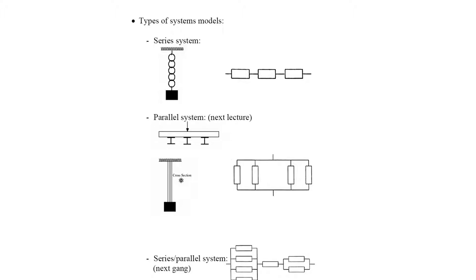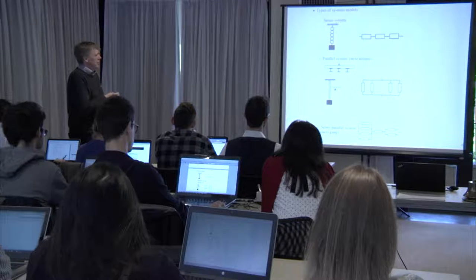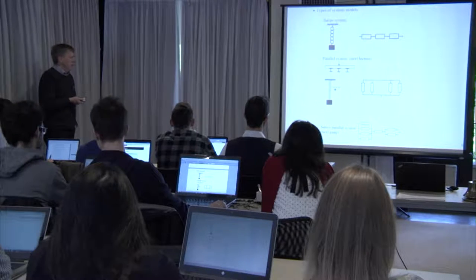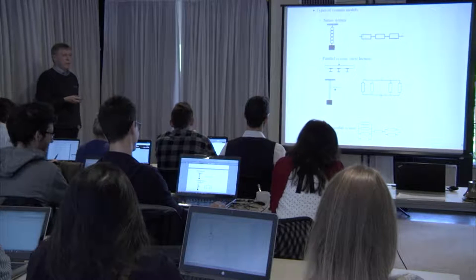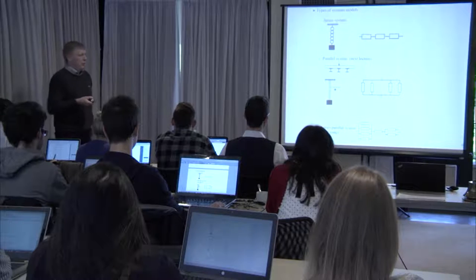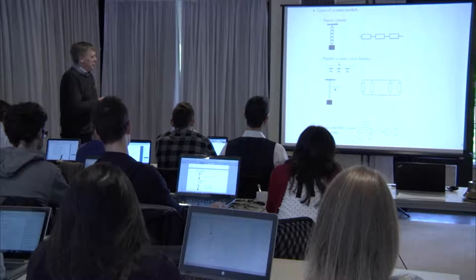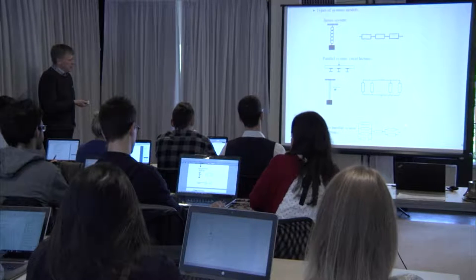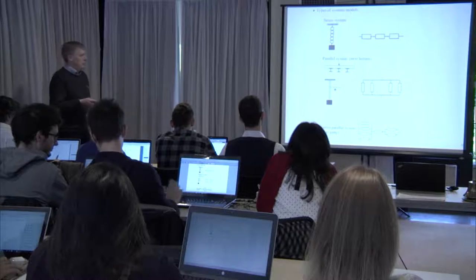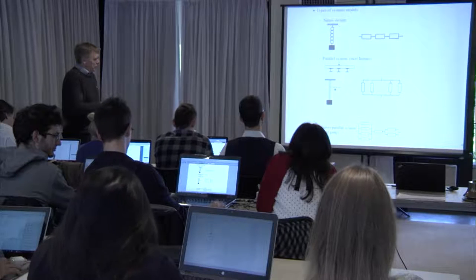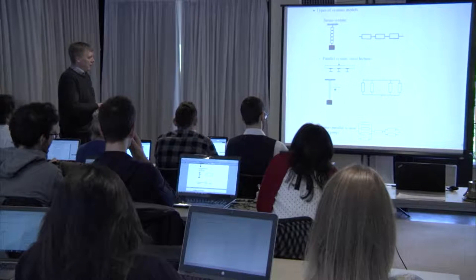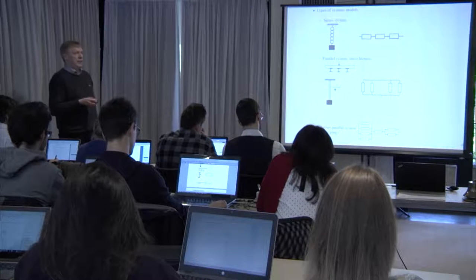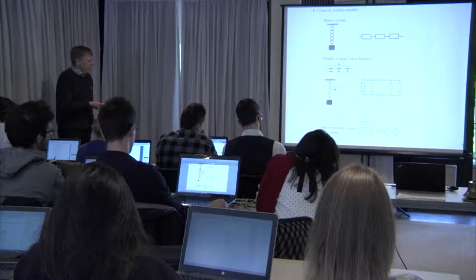There are two different kinds of systems. A series system — like a chain — fails if just one component fails, as in a statically determined structure. A parallel system — like a cable with multiple wires — requires all components to fail before system failure occurs. Real systems are typically combinations: multiple failure modes each modeled as a parallel system, with the parallel systems themselves arranged in series, since if any failure mode occurs, the structure fails.